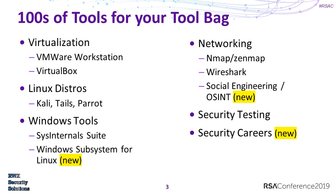Also new this year is talking about social engineering and open source intelligence, or OSINT. OSINT is used for information gathering to help you answer the question: what is seen about my network, about my company, across the Internet? This is often associated with social engineering.